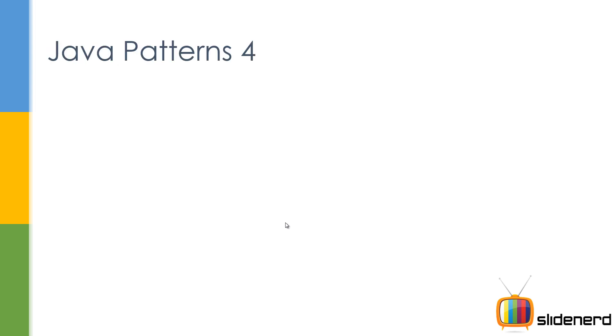It's pretty simple. If I say print star it's gonna print 1 star. If I want 4 or 5 I have to put a for loop — I'll say: for int j = 4; j greater than 1; j minus minus — and it's gonna print 4 stars.